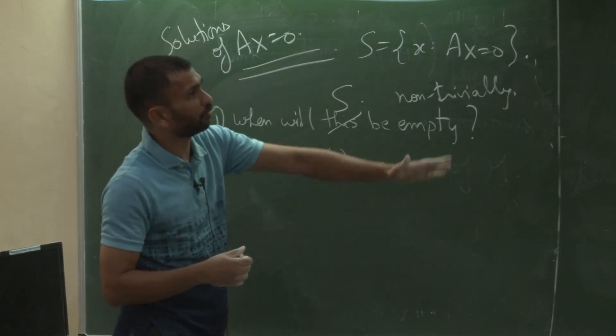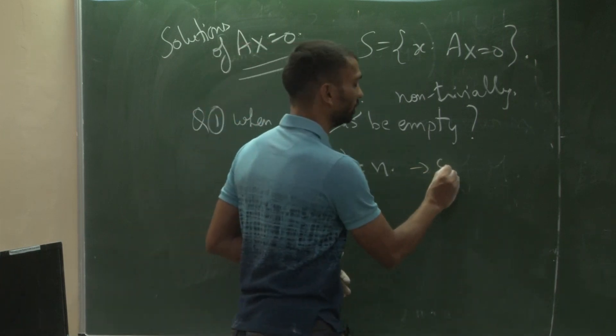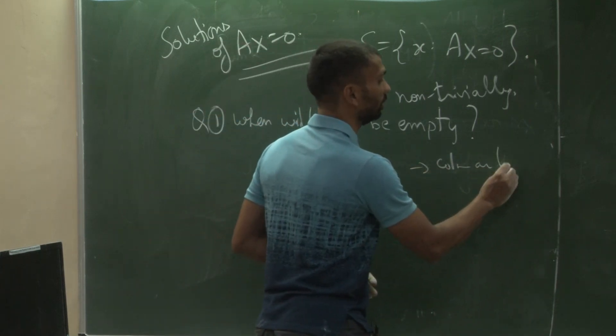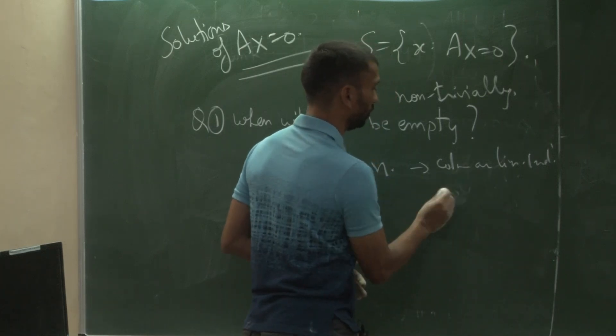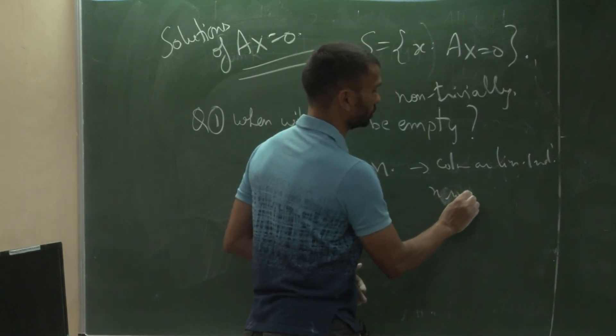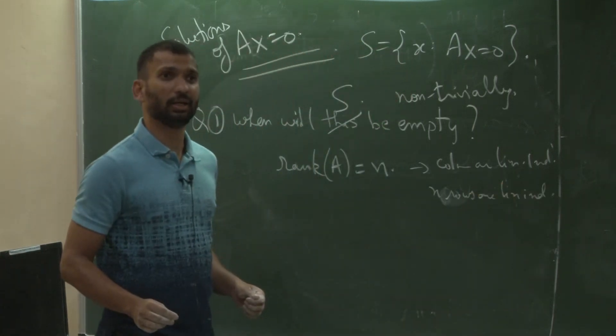Now, because of whatever we have discussed, there are multiple ways to say it. We can say that columns are linearly independent or n rows are linearly independent.